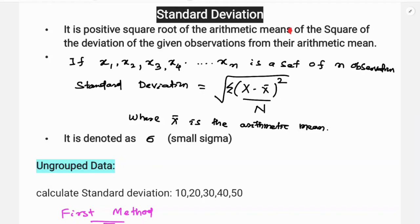If x1, x2, x3, x4 are n observations, the formula will be the square root of the summation of (x minus x-bar) whole square divided by n. Here x-bar is the arithmetic mean and n is the number of observations. It is denoted as small sigma.